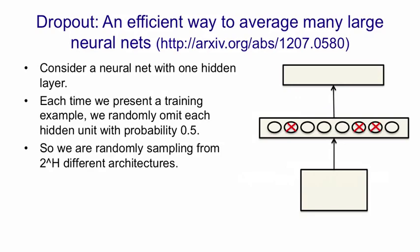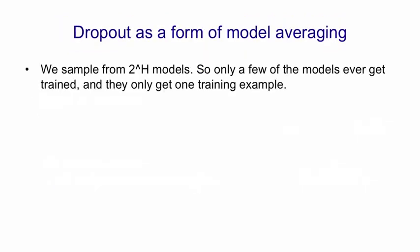What this means is we're randomly sampling from 2 to the H architectures, where H is the number of hidden units. It's a huge number of architectures. Of course, all of these architectures share weights. That is, whenever we use a hidden unit, it's got the same weights as it has in other architectures.